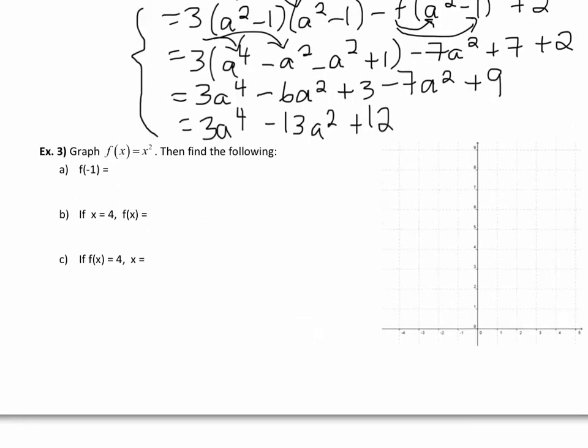Our last example asks us to graph f(x) equals x squared. So let's start with that when we're graphing. Just pick some of the points that you know. If we put in x equals 1, 1 squared is 1. x equals 2, that's 4. 3 is going to give us 9. You get the same over here because this is a quadratic.